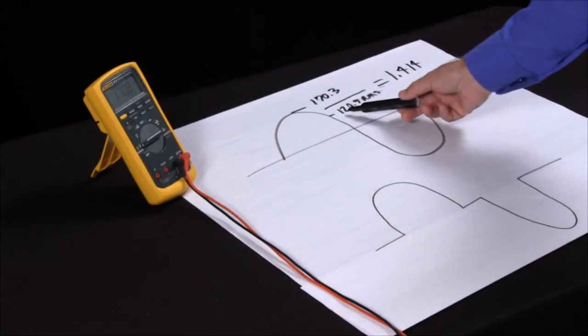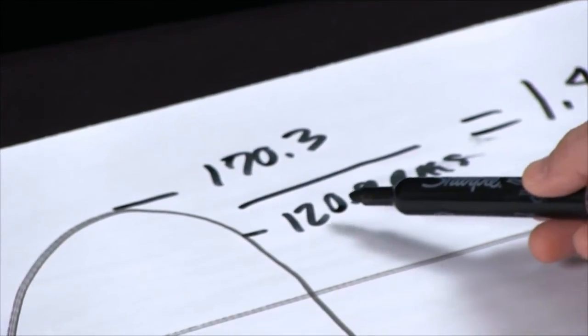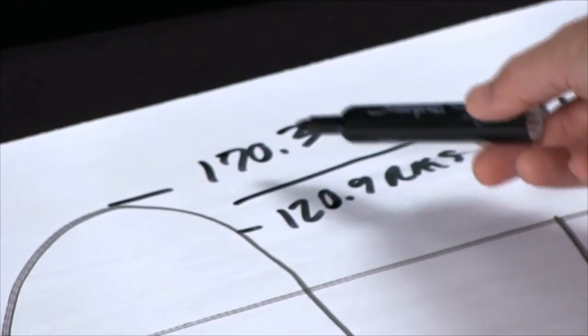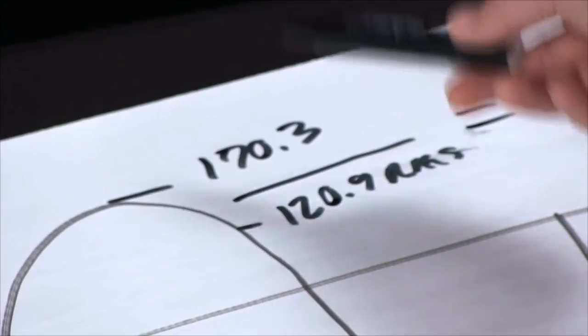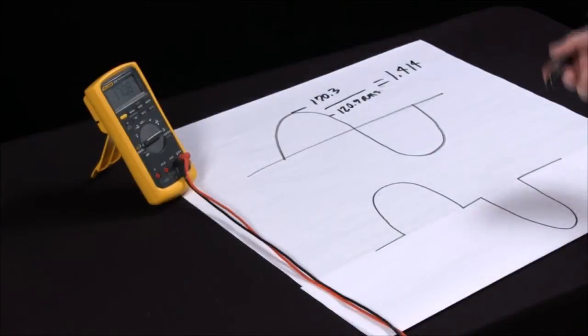So if you simply take the RMS measurement of 120, divide it by 2, which gives us 60, add 60, we should have something in the range of 170 to 180 as far as our Crest factor.